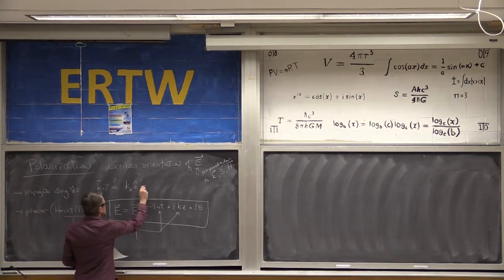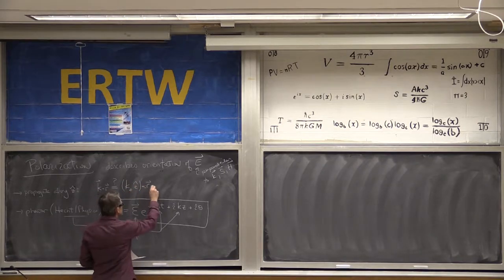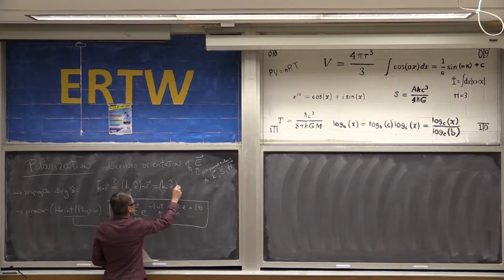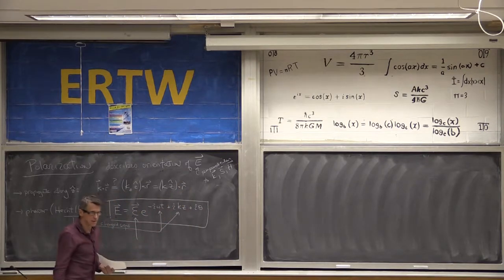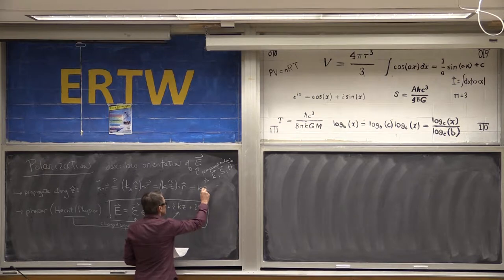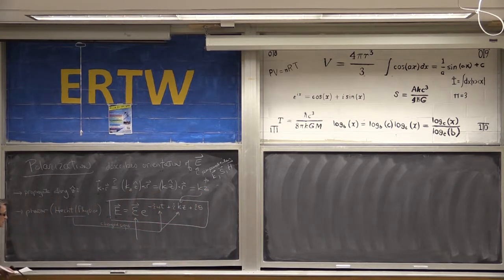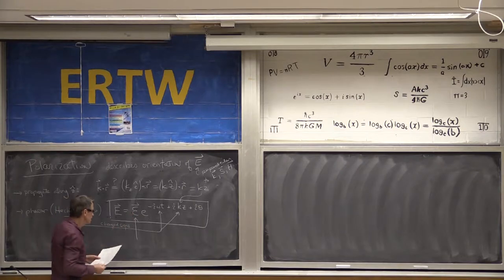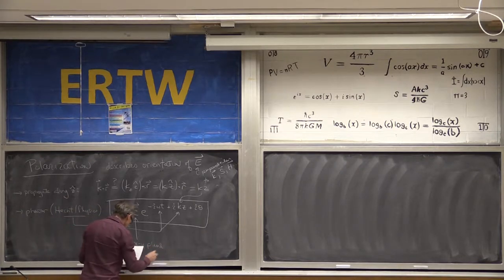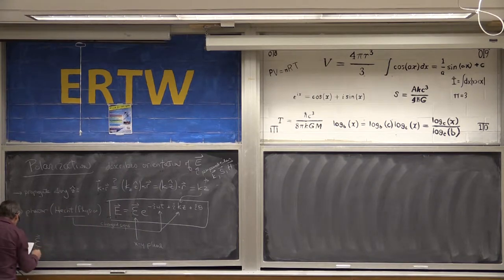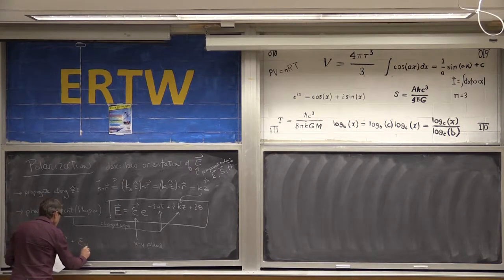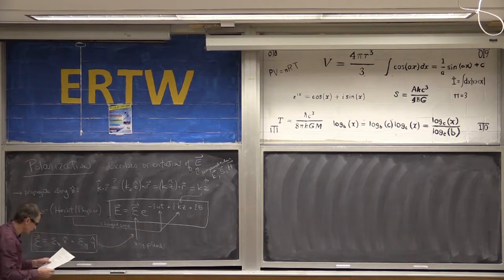There are plane waves like this only. In the plane wave, I've got this electric field confined only to the XY plane. If I want to describe this vector, it has a component along the X direction EX, and a Y component along the Y direction EY. So I can now look at this vector and all its different modalities in this plane.